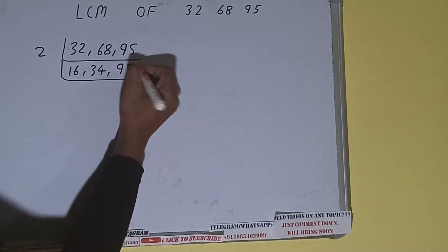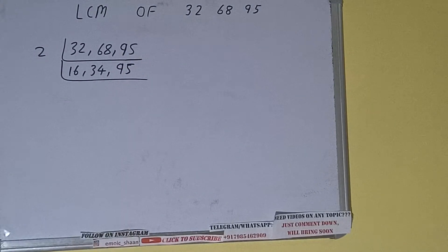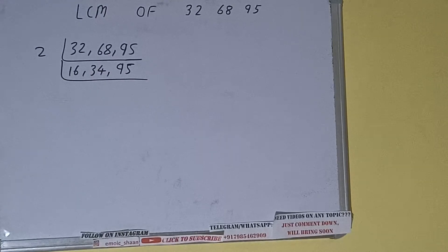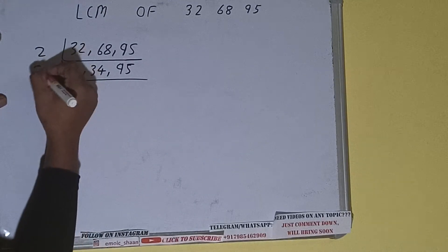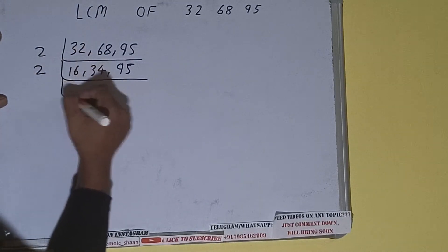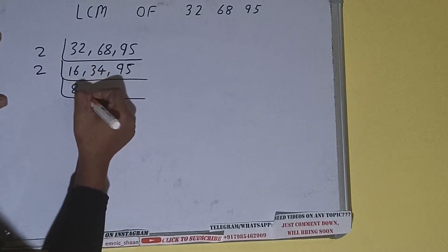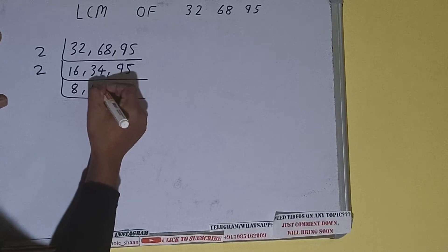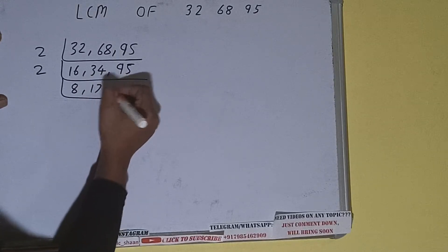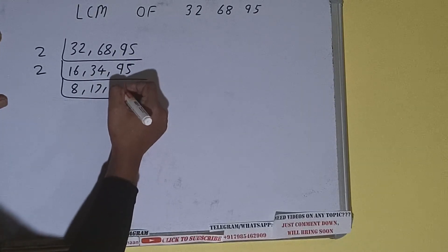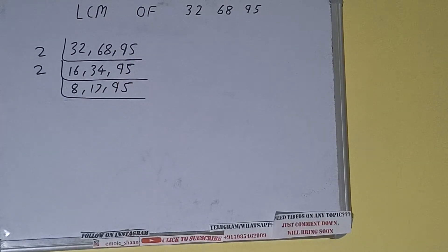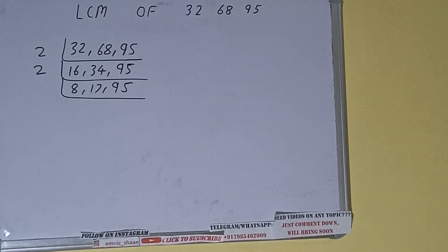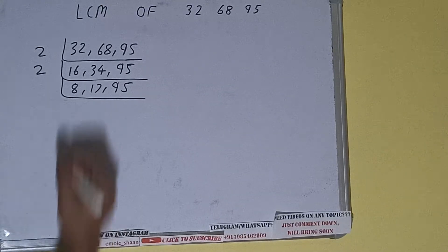Again, if we check, only the first and the second number are divisible by 2, so we'll divide only those two. The first number will become 8, the second number will become 17, and the third number is not divisible so it will remain 95.